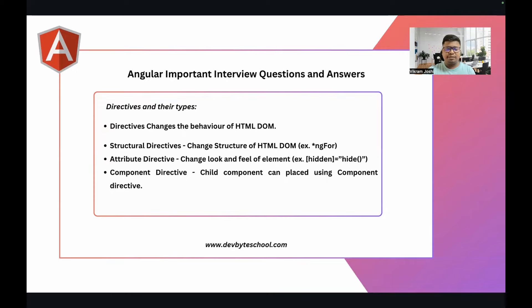Interviewers generally ask about directives and their types. Directives are elements that change the behavior of an HTML DOM element — they decide how the appearance of the HTML DOM will be. There are three types of directives: Structural, Attribute, and Component — you can remember this as SAC. Structural directives change the structure of the DOM, for example ngFor, which decides how many times an element will repeat. Attribute directives change the look and feel of an element, for example hidden, which decides whether the element is hidden based on a particular condition. Component directives allow you to place a child component inside a parent component.